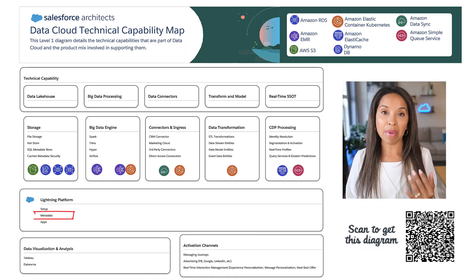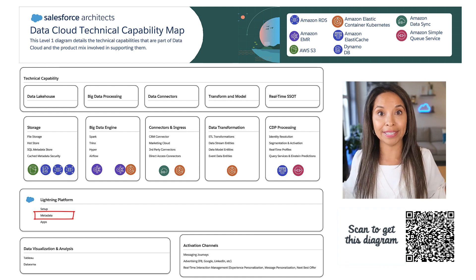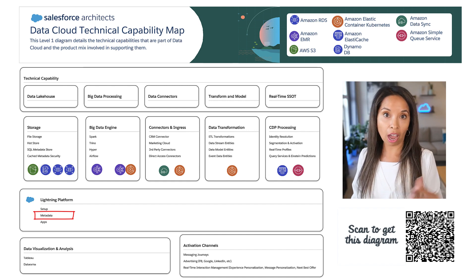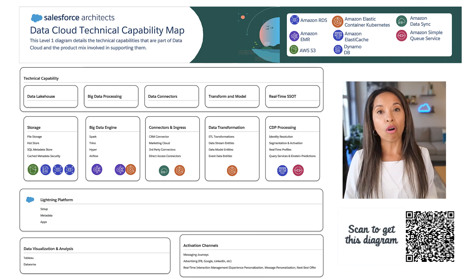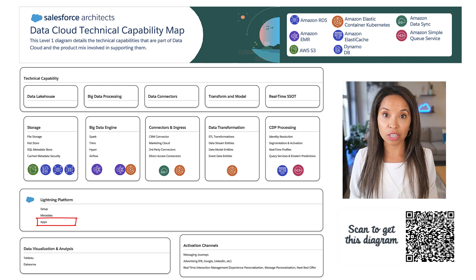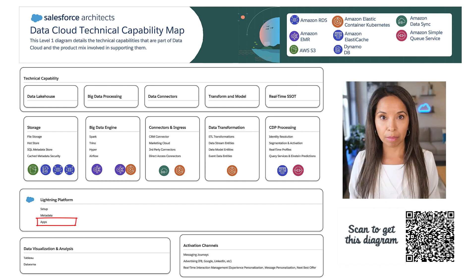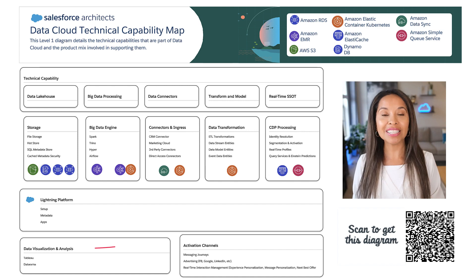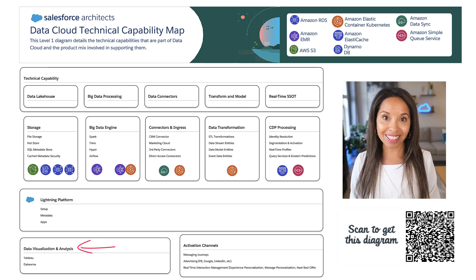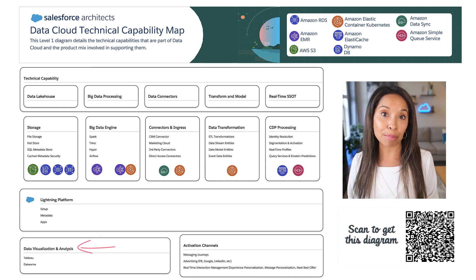And all of this comes together because of the Lightning platform — whether we're talking about the metadata that you define and enforce on your data, which gets defined in core and then copied back to the storage layer, or whether it's the data cloud UI, which is exposed in core. And because everything is built on Salesforce, we can leverage the visualization and analysis tools in the Customer 360, like Tableau.